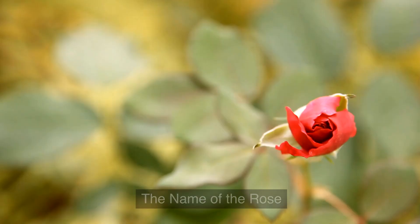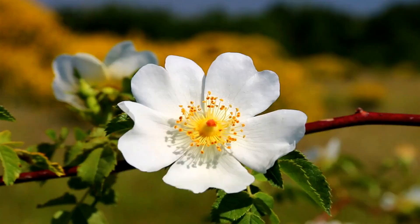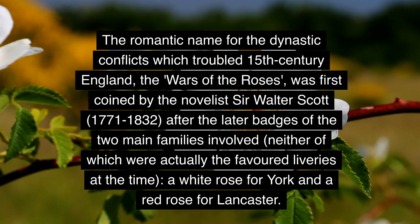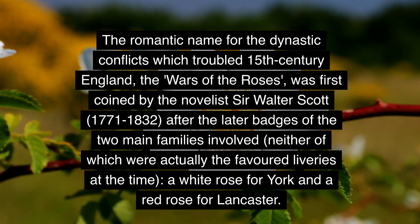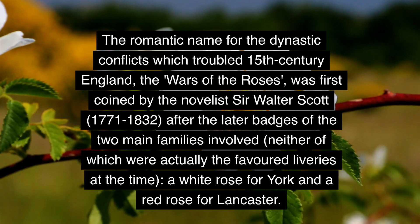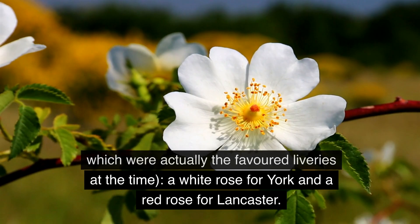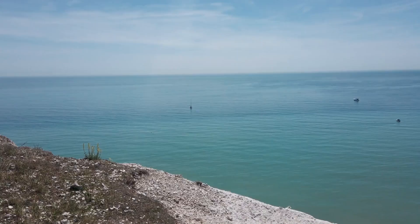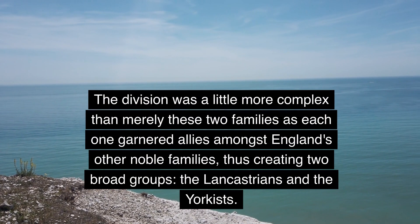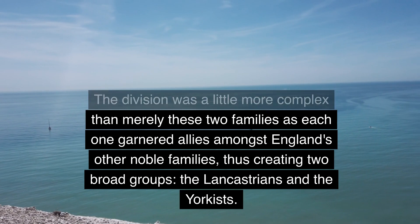The romantic name for the dynastic conflicts which troubled 15th century England — the Wars of the Roses — was first coined by the novelist Sir Walter Scott (1771–1832), after the later badges of the two main families involved, neither of which were actually the favored liveries at the time: a white rose for York and a red rose for Lancaster. The division was more complex than merely these two families, as each garnered allies amongst England's other noble families, creating two broad groups: the Lancastrians and the Yorkists.